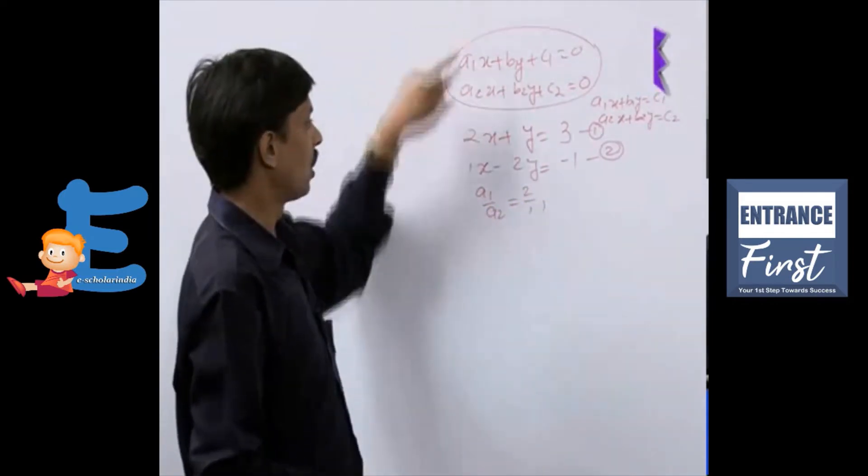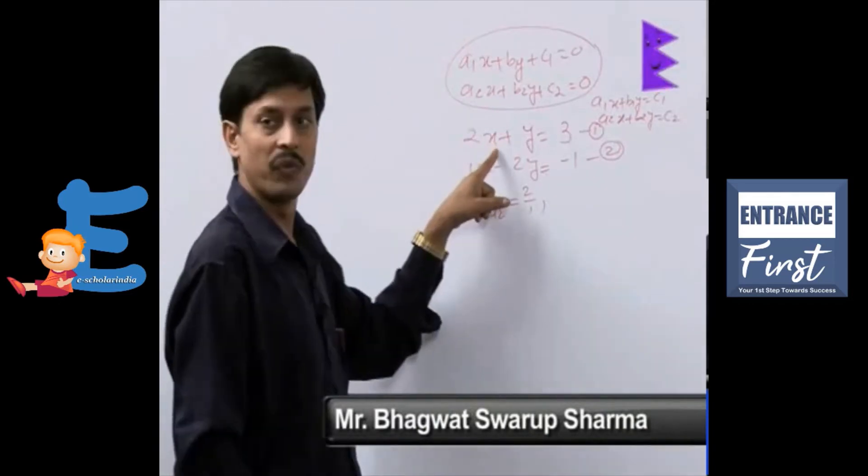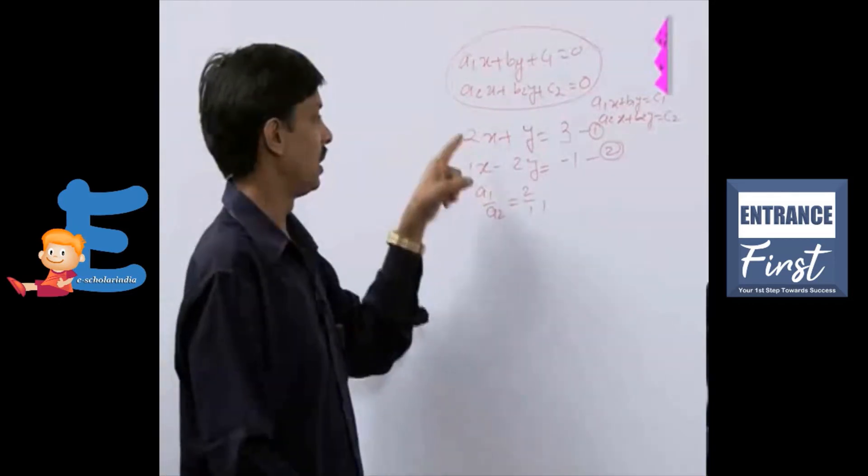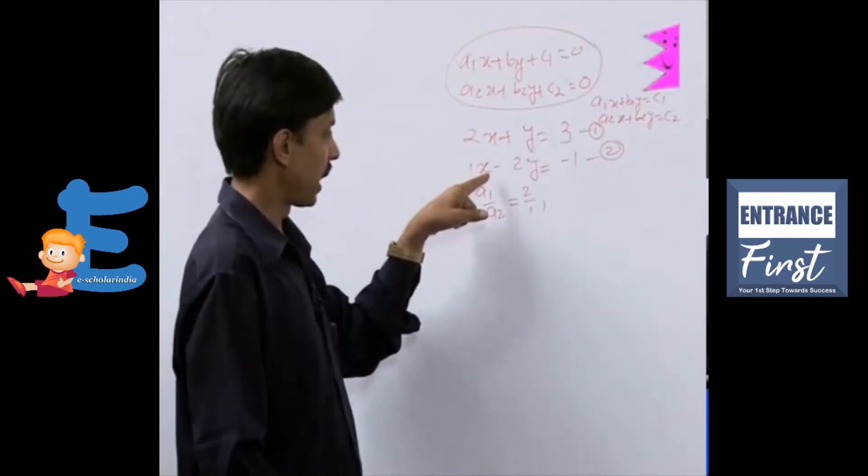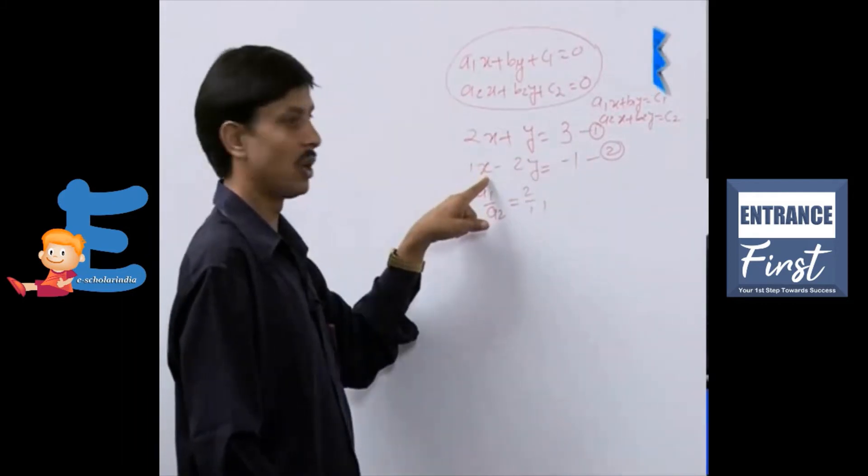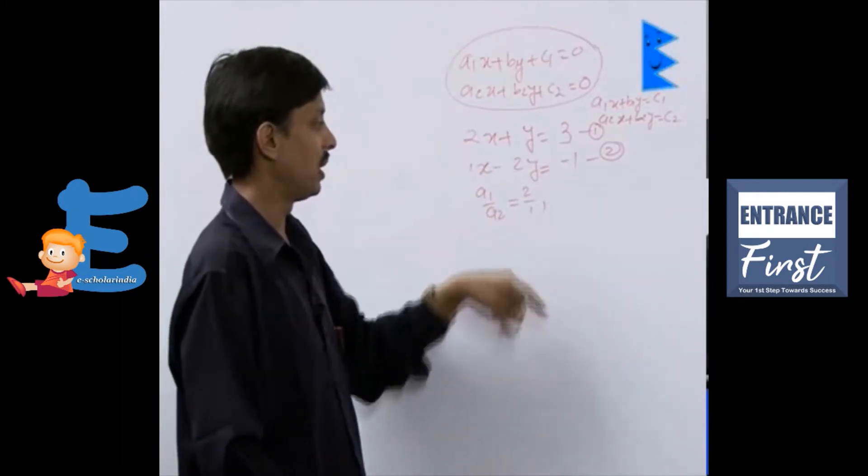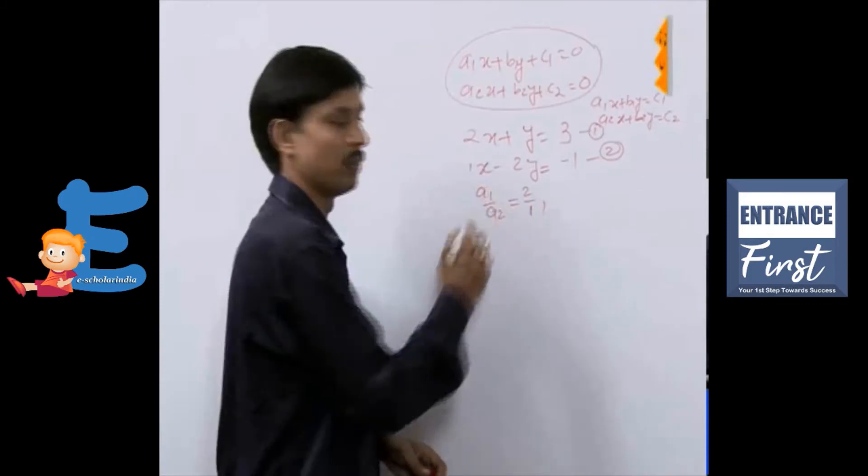First ratio, if you compare here, first equation coefficient of x is a1 that is 2. Second equation coefficient of x is a2. So, a1 by a2 is coming out to be 2 by 1.